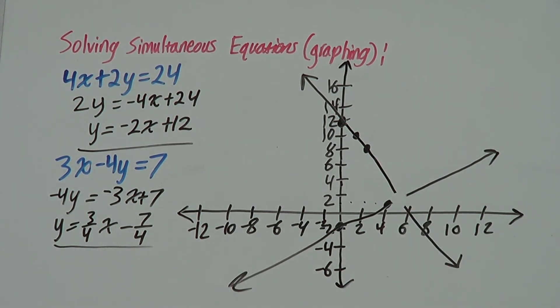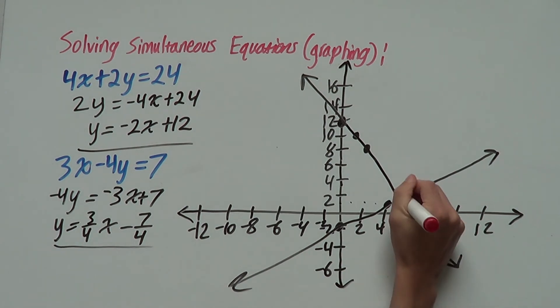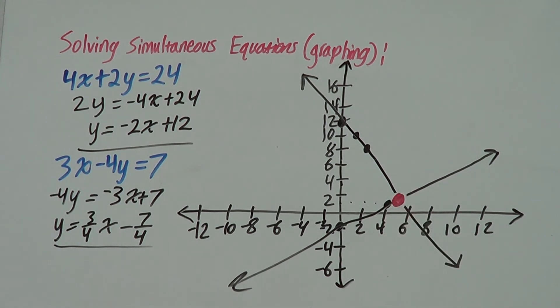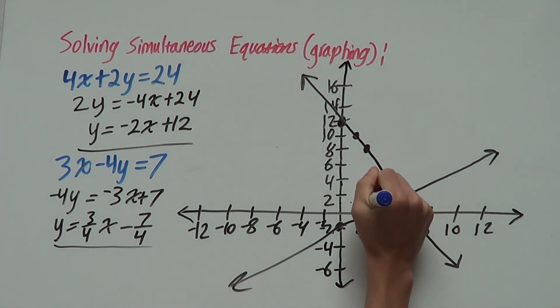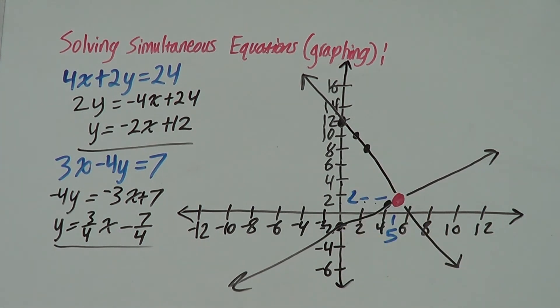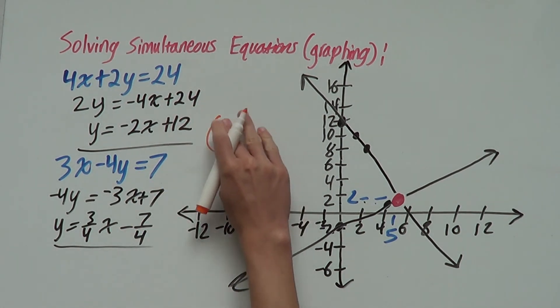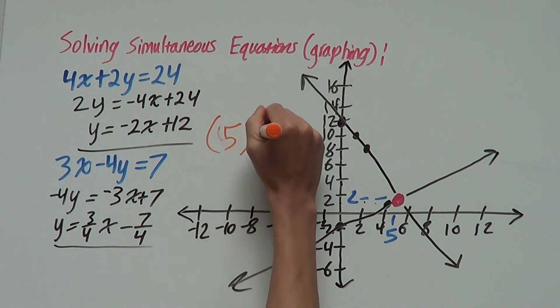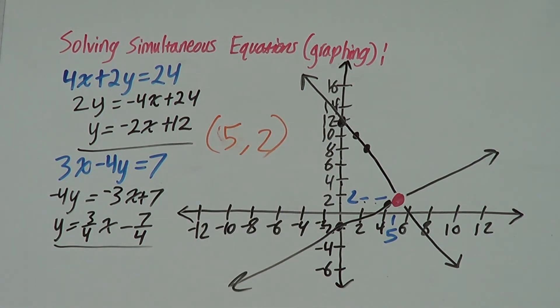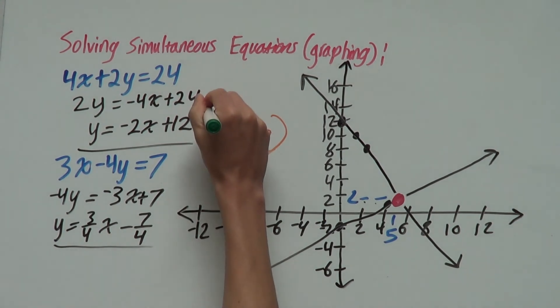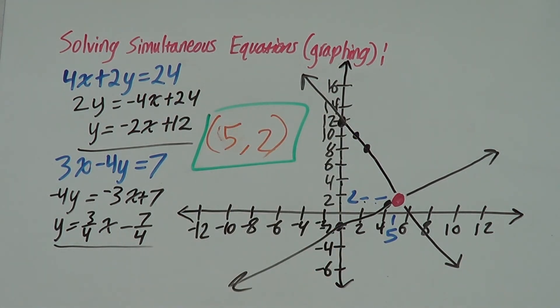So, the point where these lines intersect is the solution to our simultaneous equations. And these intersect at 5, 2. So, the solution to our simultaneous equation is x is 5 and y is 2. So, the solution is 5, 2. And we're done.